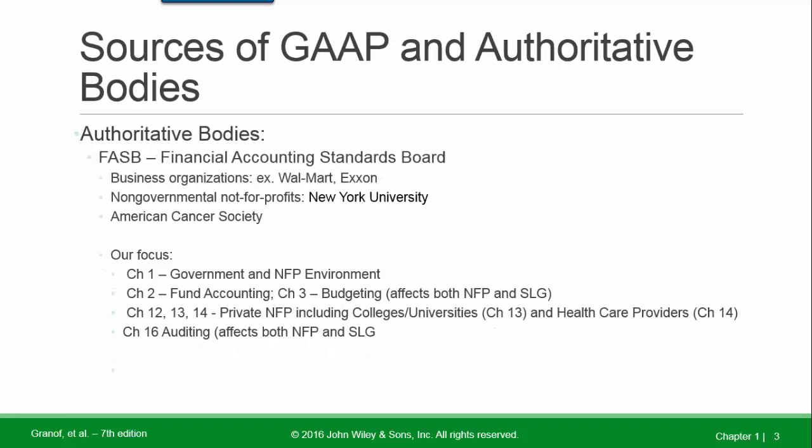Authoritative bodies: FASB, the Financial Accounting Standards Board, covers Business Organizations, Non-Governmental Not-for-Profits, and Private Not-for-Profits, with examples shown. Our focus begins with Chapter 1: Governmental Not-for-Profit Environment.